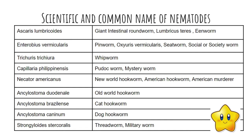One of the highlights in parasitology is knowing the scientific and common names of nematodes — this is a common board exam question. Ascaris lumbricoides is otherwise known as the giant intestinal roundworm, also called lumbricosterius and inchworm. We will cover Enterobius, Trichuris, and others as the semester progresses, but for this video lecture, the focus is Ascaris lumbricoides.